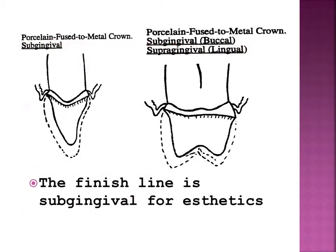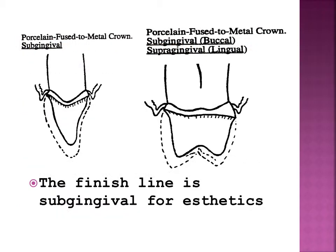In the anterior region of the mouth, the labial or buccal gingival finish lines of preparations for porcelain crowns and gold crowns with porcelain should be placed subgingivally. Location of these finish lines apical to the crest of the gingiva places the demarcation line between the restoration and the tooth out of sight in the gingival sulcus.